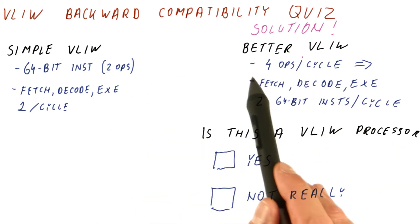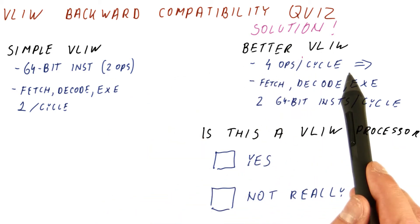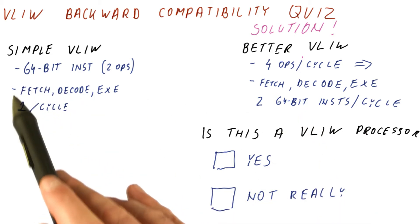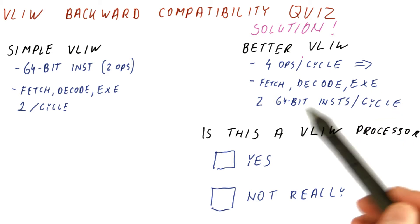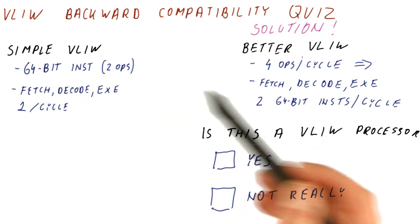Now we want to have a VLIW processor with four operations per cycle. The way we want to do that while maintaining backward compatibility with the original version is to fetch, decode, and execute two of those 64-bit instructions per cycle.